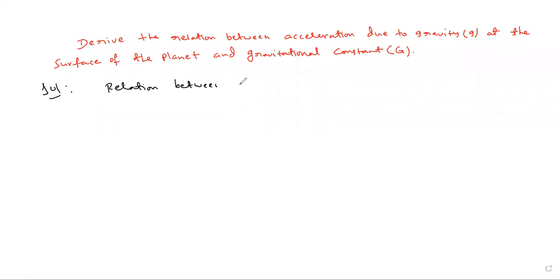The relation between small g and capital G. Consider a body of mass m is placed on the surface of a planet of mass capital M and radius capital R.